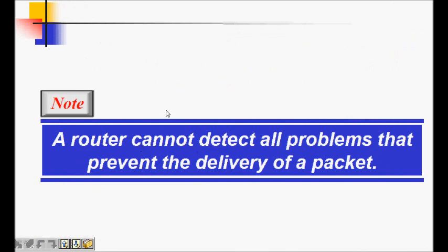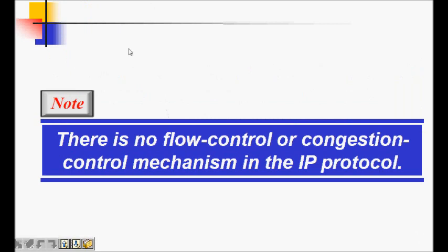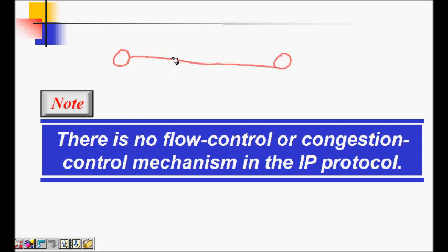There is no flow control or congestion control mechanism at the network layer in the IP protocol. The network layer is only concerned with sending packets — it does not check whether the receiver is ready or whether there is congestion. ICMP provides some feedback here through a mechanism called source quench.